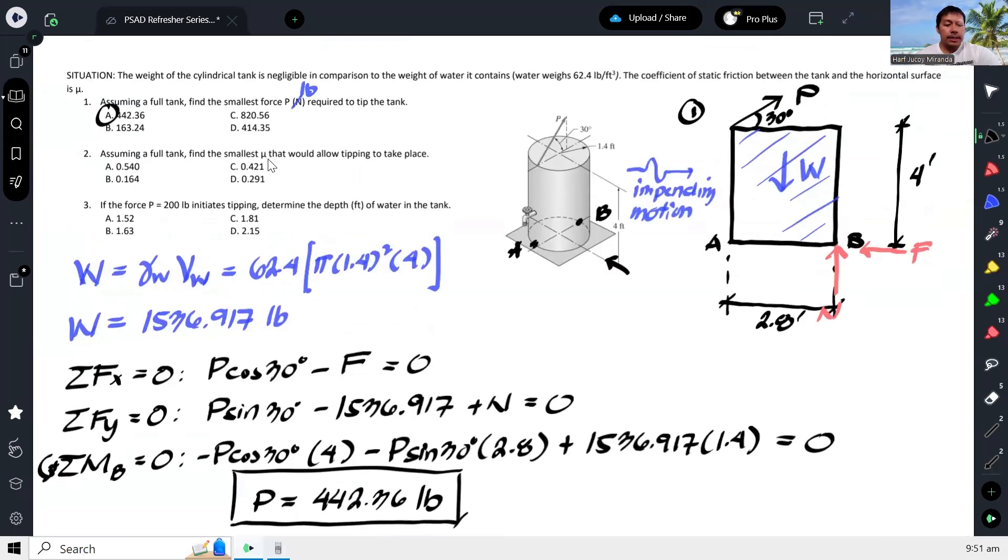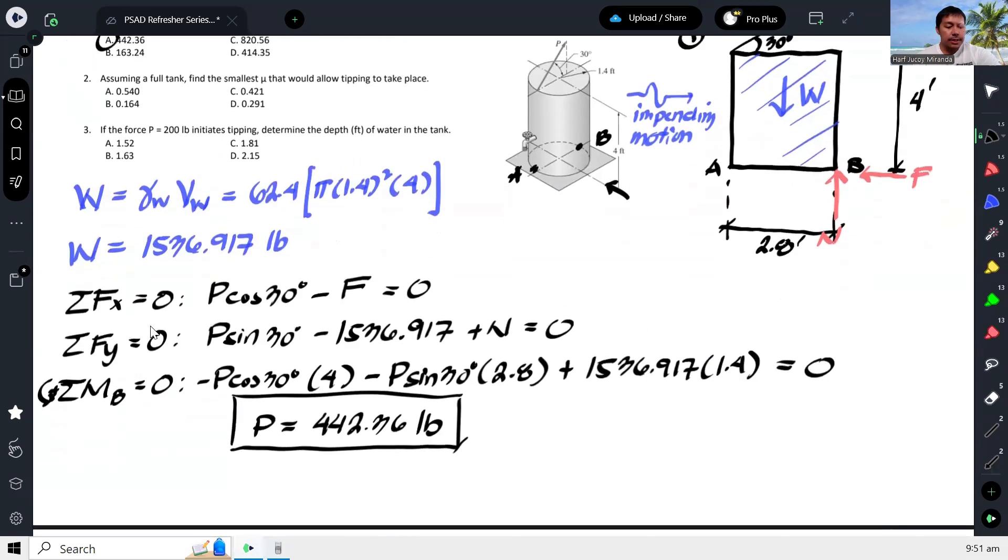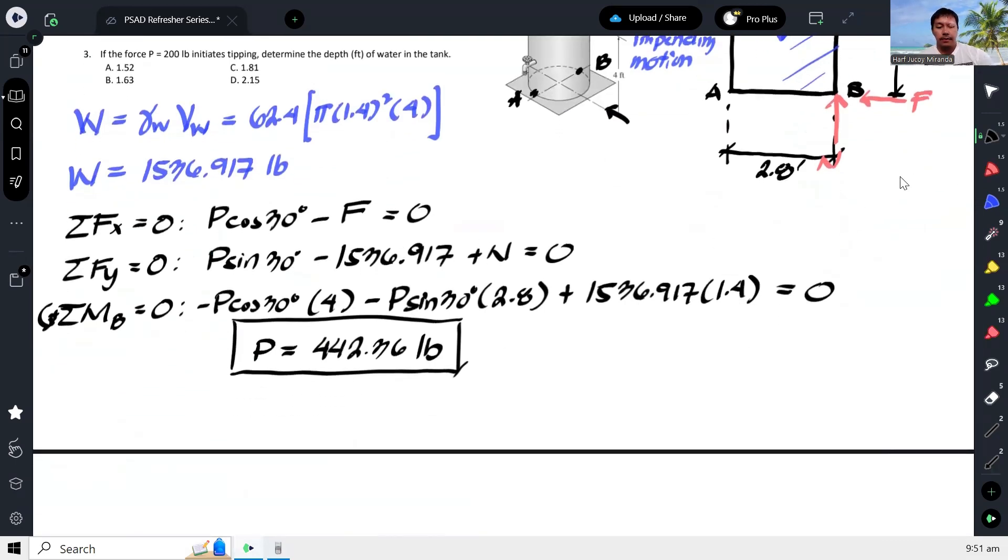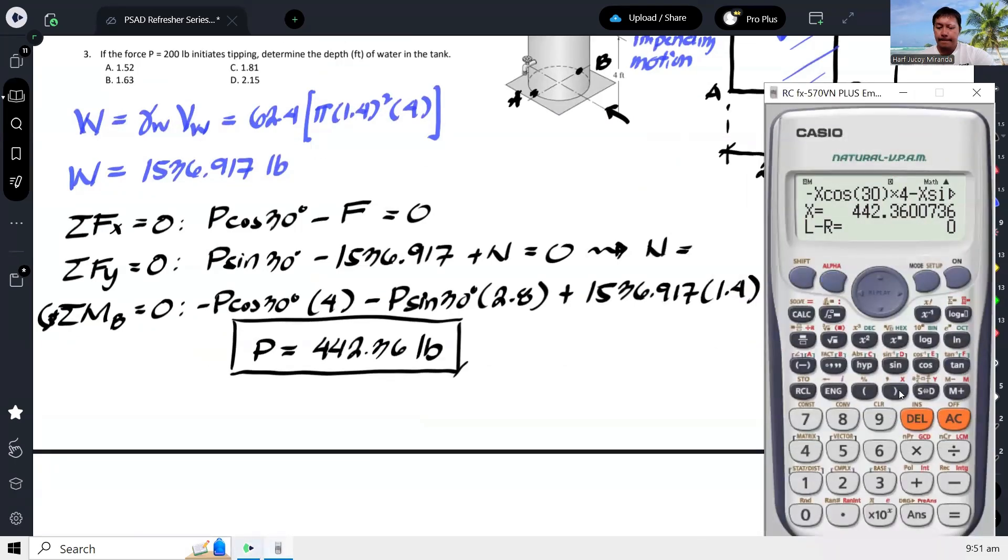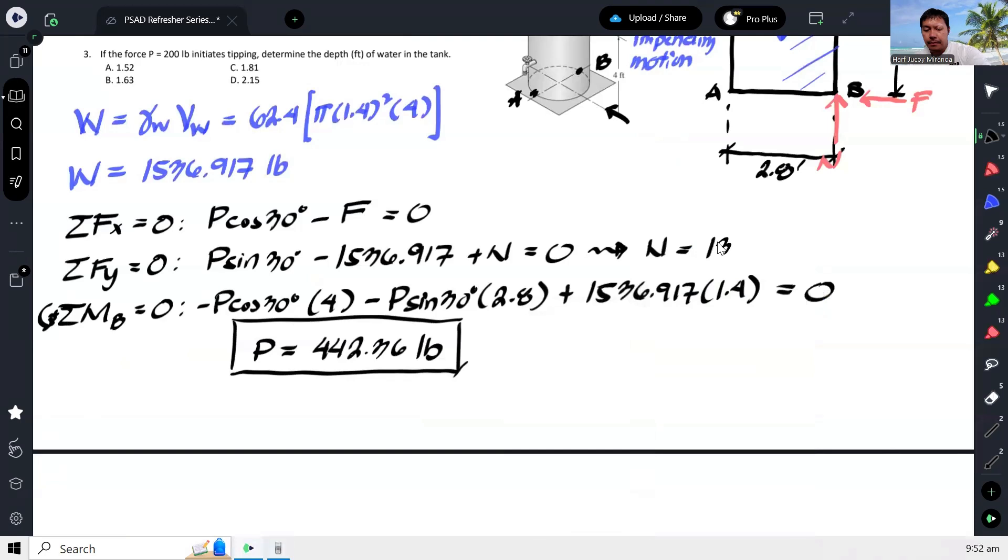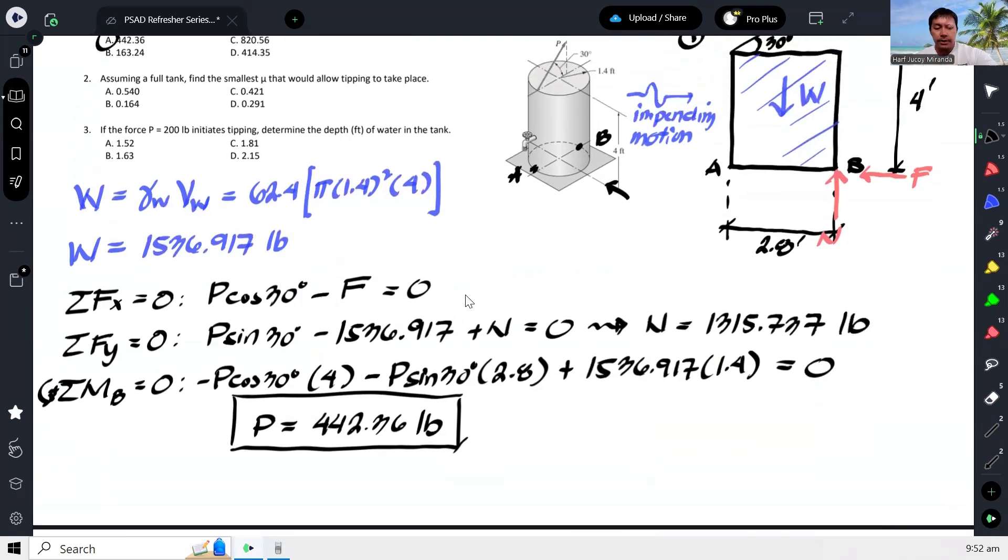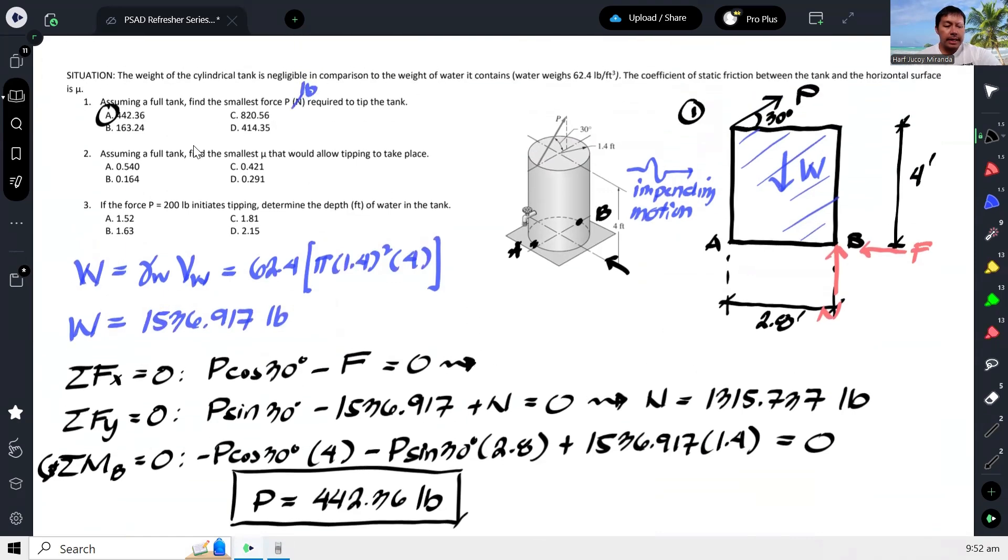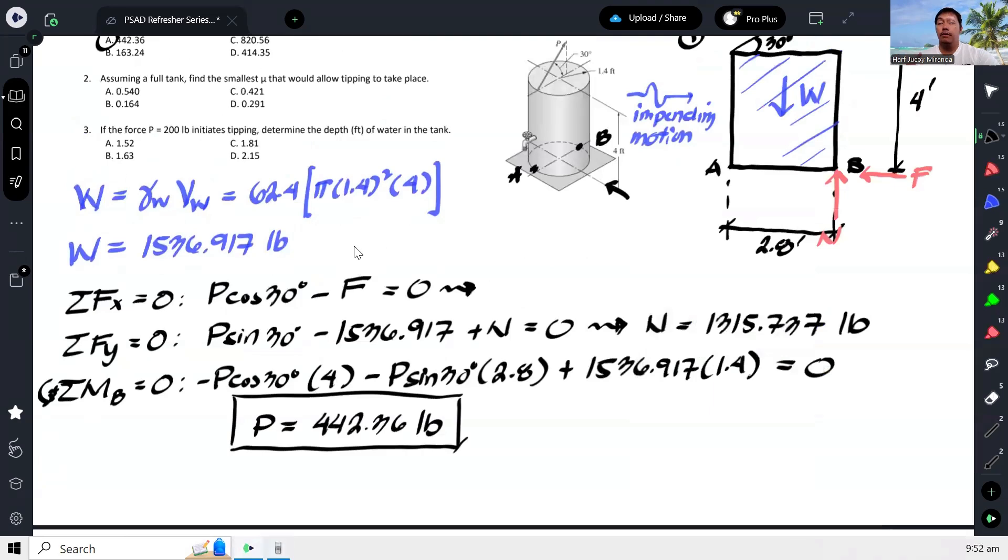Next, assuming full tank, find the smallest μ. So hinahanap naman yung μ natin. So actually dun sa summation of forces Y, we can solve for N. We can solve for N kasi na-compute na natin yung P. So we will have minus yung W, so negative to, so pag tinulad post sa kabila pagpapass this, so 1315.737, pounds.